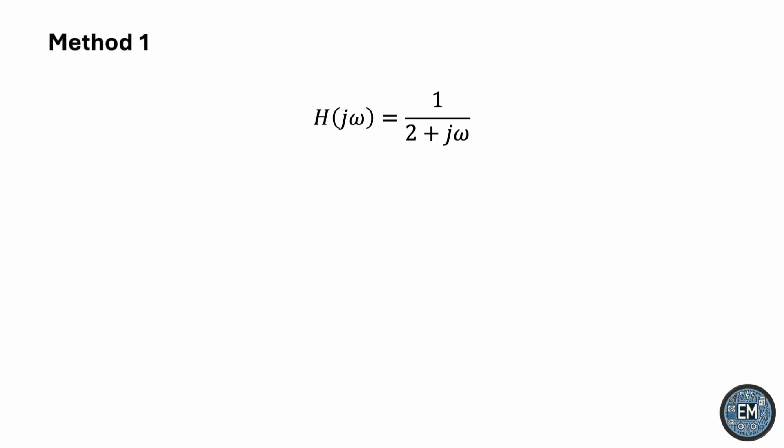Method one entails converting this expression into Cartesian form: a real part a and an imaginary part b. The magnitude would be the square root of a squared plus b squared, and the phase would be the inverse tangent of b over a.